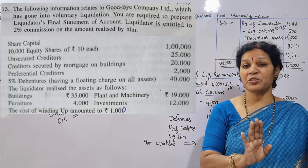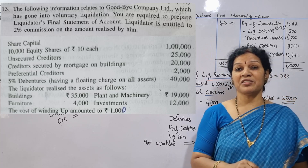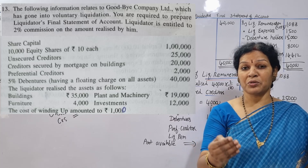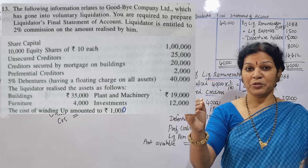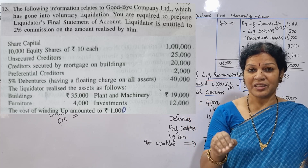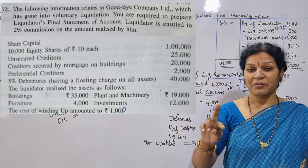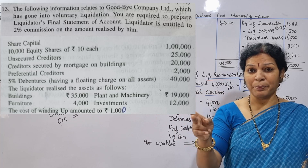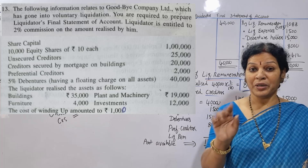Unsecured creditors are not going to be affected. The realized amount minus payments — unsecured creditors are not affected. They are going to balance at 2/100 or 2/102.